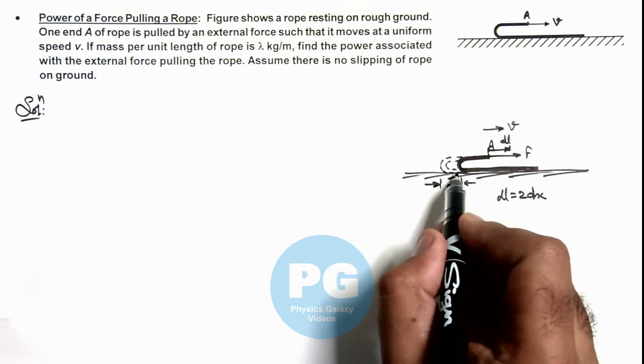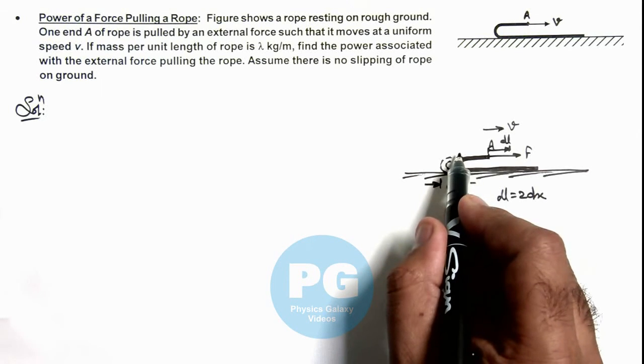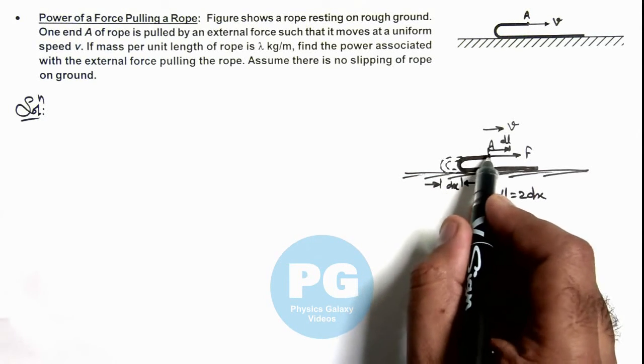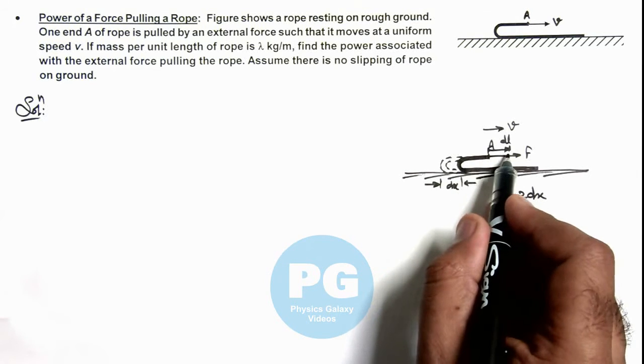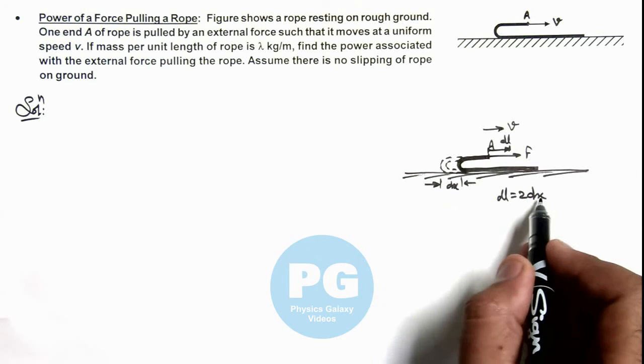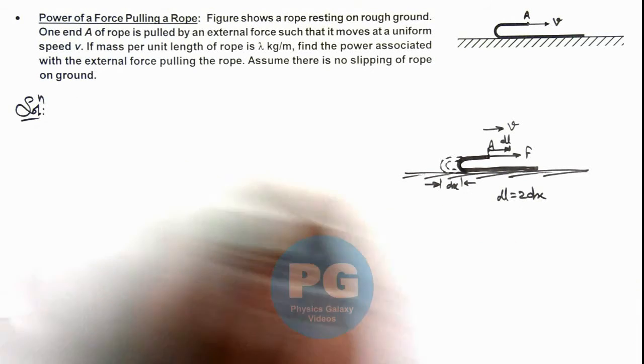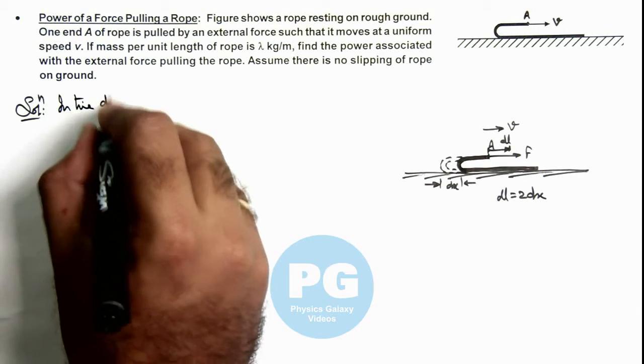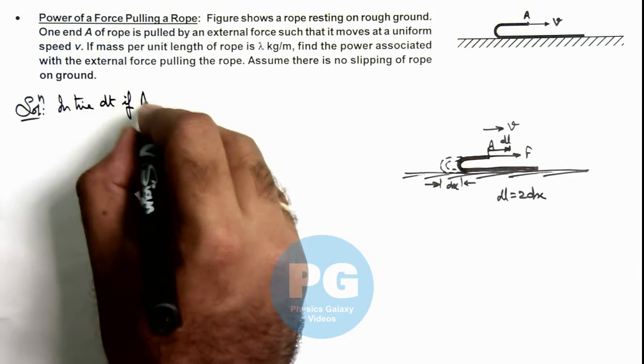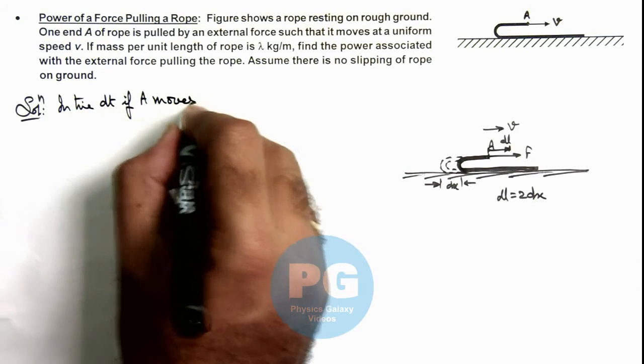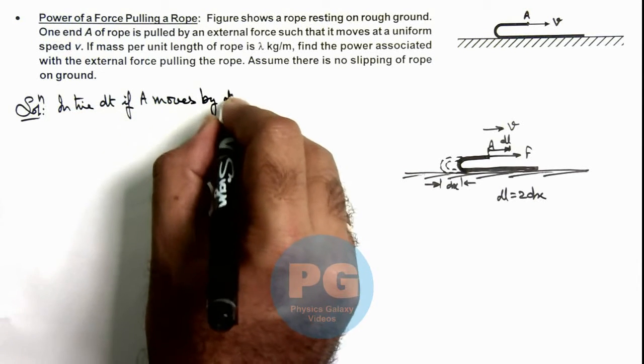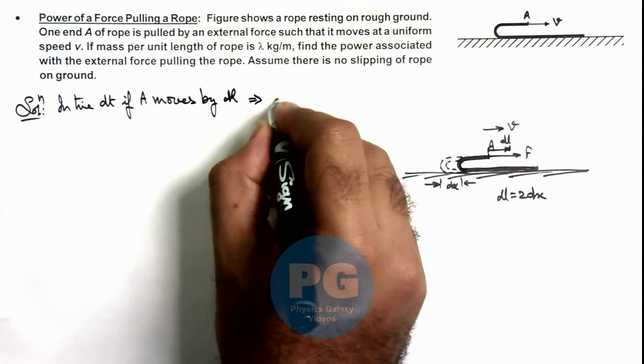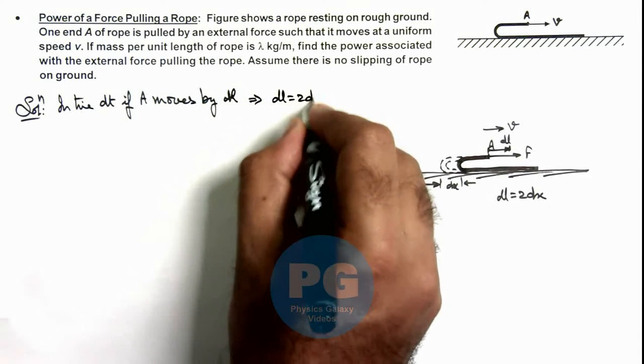So if dx is the length of rope which is shifted from lower part to upper part in time dt, then the length or the displacement of point A will be twice of this dx. So in this situation, in time dt, if A moves by dl, this implies dl is equal to 2dx.